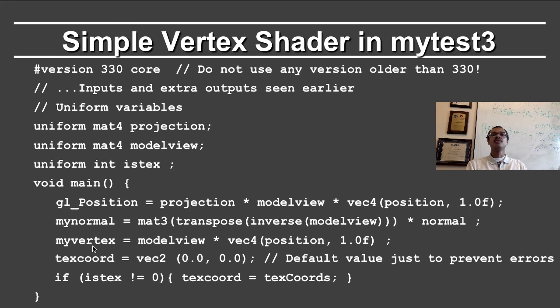However, we also need the value in eye coordinates in the 3D world for later shading calculations in the fragment shader. That is done by multiplying the model view matrix times the position, again, in homogeneous coordinates, we made it a vec4.